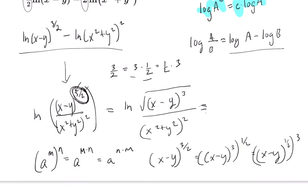In other words, you could do it in either order. So if you saw it written like this, if you saw x minus y square rooted and then cubed over x squared plus y squared squared, that would be the same thing.